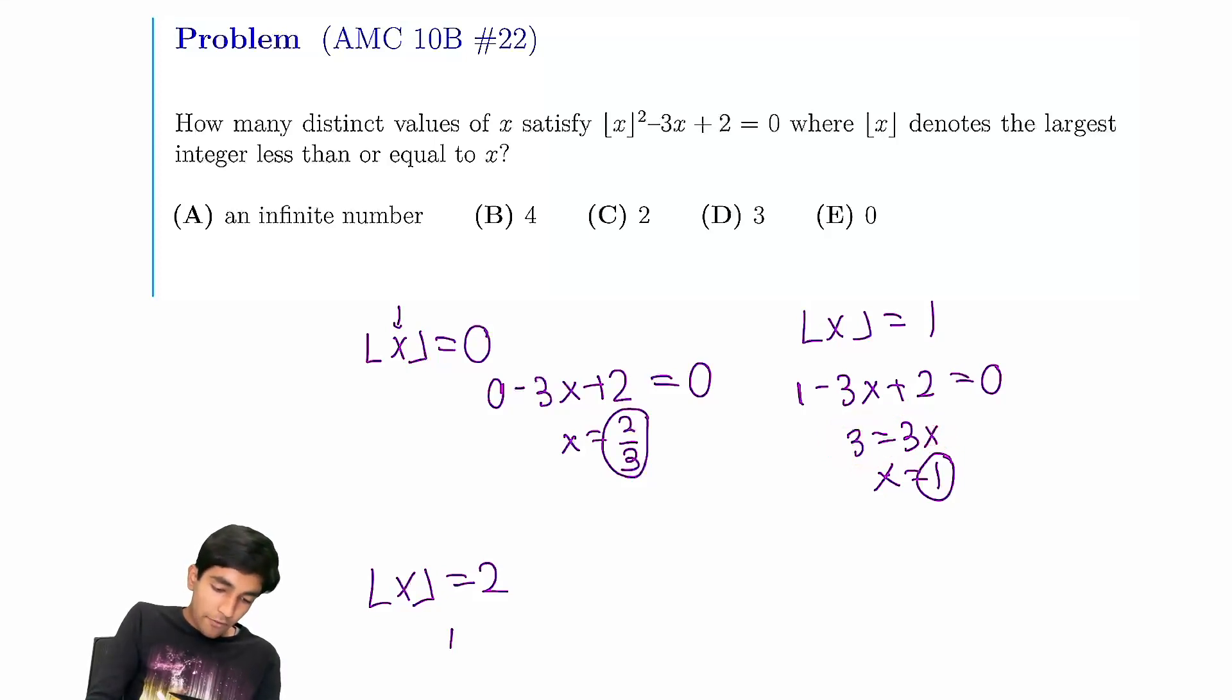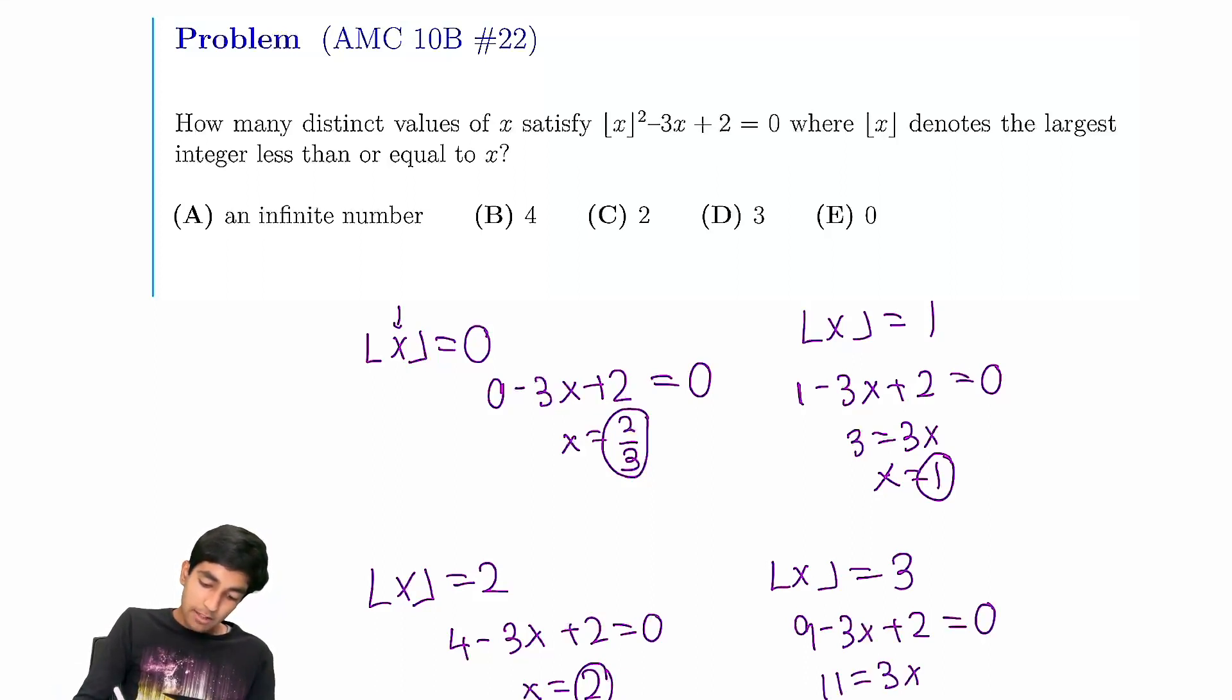And then here we have 4 minus 3x plus 2 equals 0, so therefore x has to be 2. That gives another solution. And finally, or not finally, but if floor of x is 3, now we have 9 minus 3x plus 2 equals 0. Solving, 11 equals 3x, so x is 11/3, which does satisfy floor of x is 3.